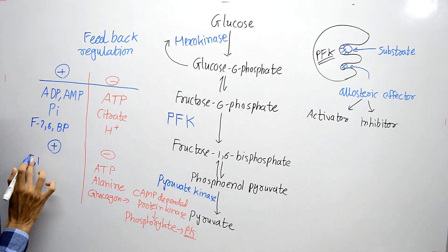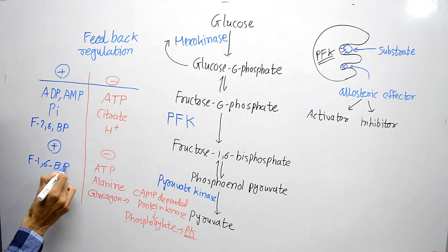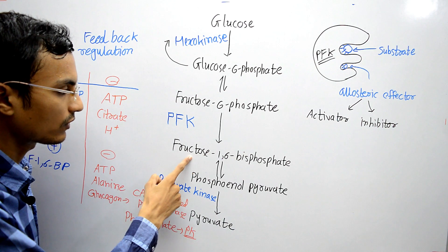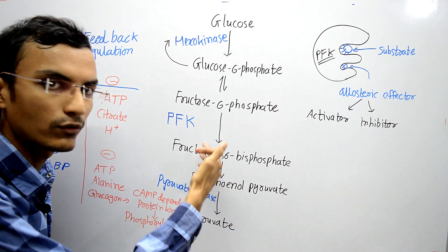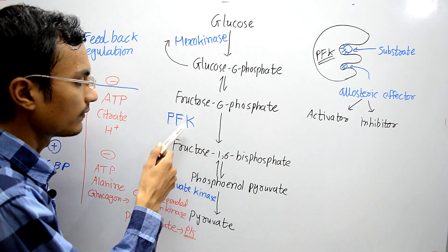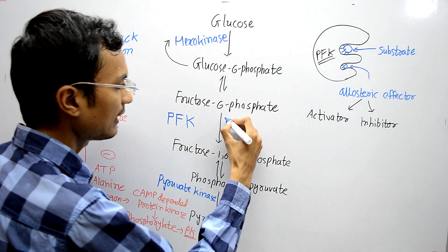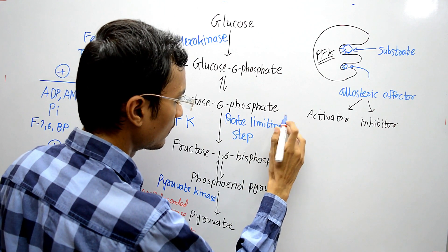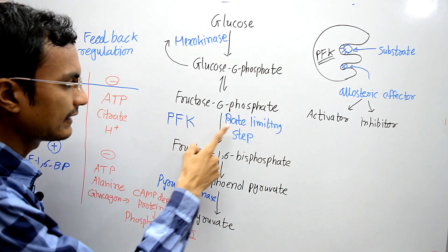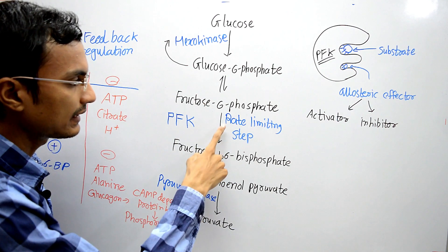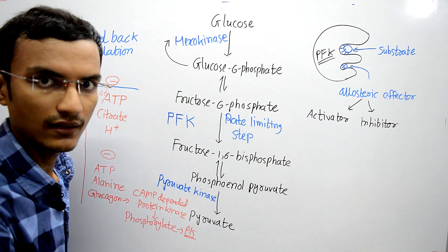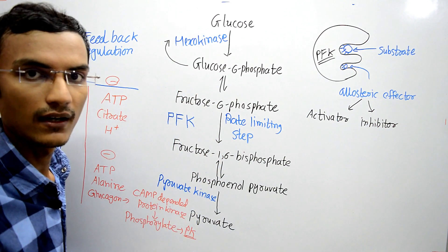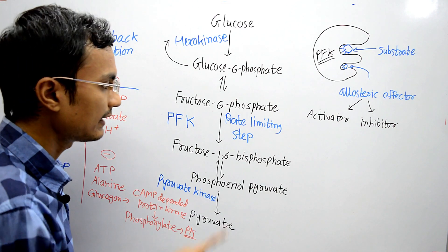Fructose-1,6-bisphosphate activates pyruvate kinase enzyme. A higher concentration of fructose-1,6-bisphosphate signals that the reaction must be carried forward. The step catalyzed by pyruvate kinase is the rate-limiting step, meaning it determines the rate of the whole glycolysis process. If this step occurs at slow speed, the whole glycolysis process is slow; if this step is fast, the whole process occurs at a higher rate.